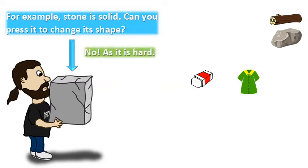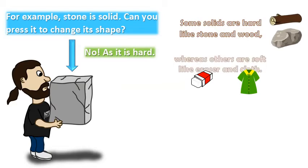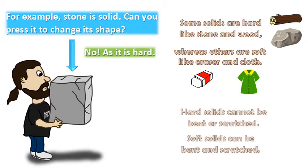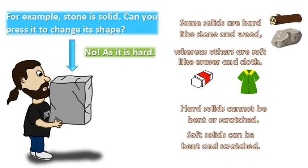Some solids are hard like stone and wood, whereas others are soft like eraser and cloth. Hard solids cannot be bent or scratched. Soft solids can be bent and scratched.